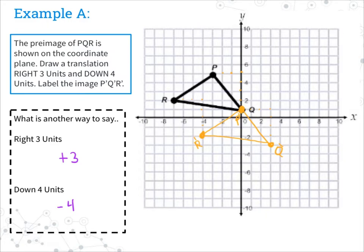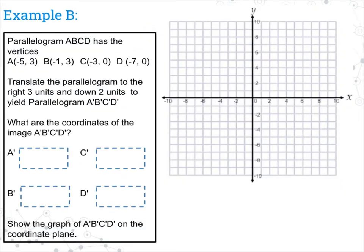Here we are at example B. Parallelogram ABCD has the vertices listed below. Translate the parallelogram right three units and down two units to yield A prime, B prime, C prime, D prime. It wants us to list the coordinates and show it on the coordinate plane. This time we don't have our pre-image on the graph, so we're going to use the math. Right means adding, left is negative, up is positive, down is negative. For point A at negative five, three — we add three and subtract two — so negative five plus three is negative two, and three minus two is one.